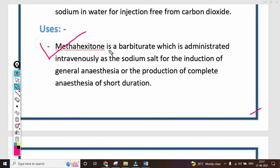Methohexitone is a barbiturate which is administered intravenously to the patient. Why? Because it is in injection form. It's given as the sodium salt for the induction of general anesthesia or the production of complete anesthesia of short duration. Methohexitone sodium is an anesthetic for short duration, for minor surgeries.